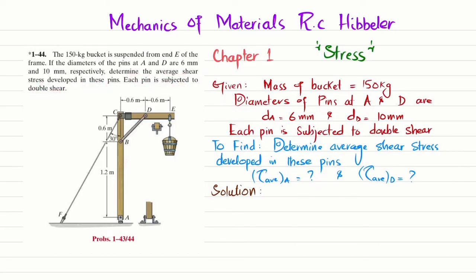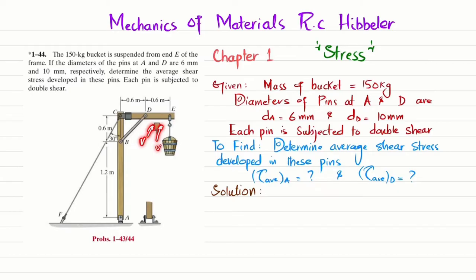You can see this is the frame and this is the bucket which is suspended from point E. The mass of the bucket is 150 kg. The diameter of pin at A is 6 millimeters and the diameter of pin at D is 10 millimeters. We have to find the average shear stress developed in each pin, and each pin is subjected to double shear.